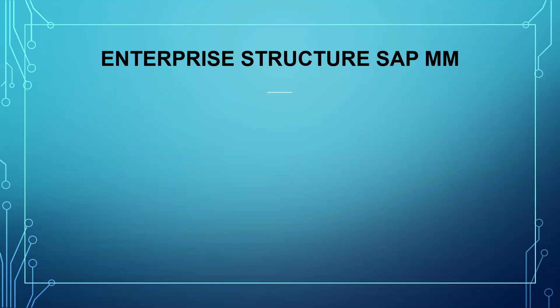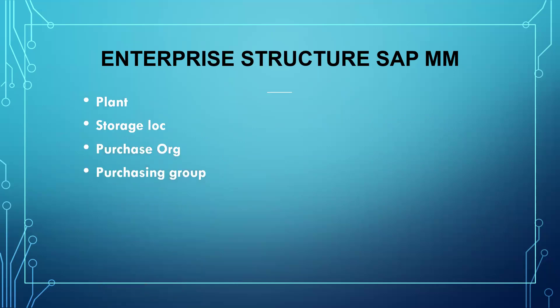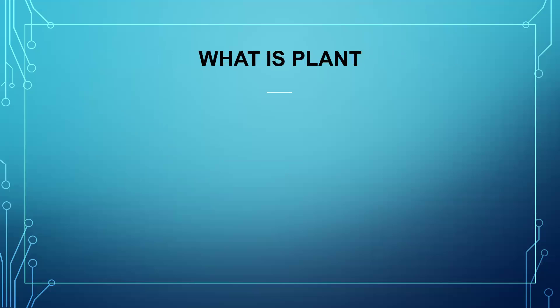What is the organization structure in SAP MM? They may ask you: plant, purchase organization, storage location, purchasing group, company, and company code. Company and company code will be created by a functional consultant — a financial consultant, a FICO consultant. All four consist of the SAP MM enterprise structure. This is the expected answer: plant, storage location, purchase organization, and purchasing group. Company and company code will be created and maintained by the FICO consultant.